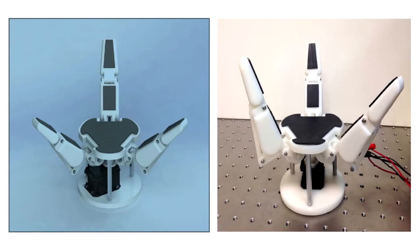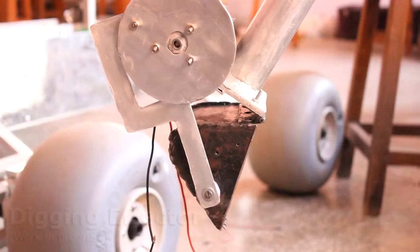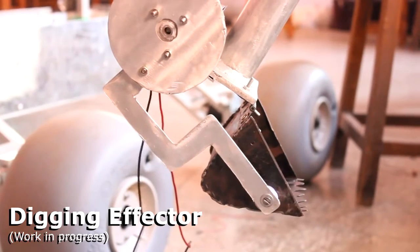A three-fingered gripper which the team is going to get 3D printed using an open source design will be used for the equipment servicing task. For the digging effector, a simple train wheel mechanism will be used to move the scoop.